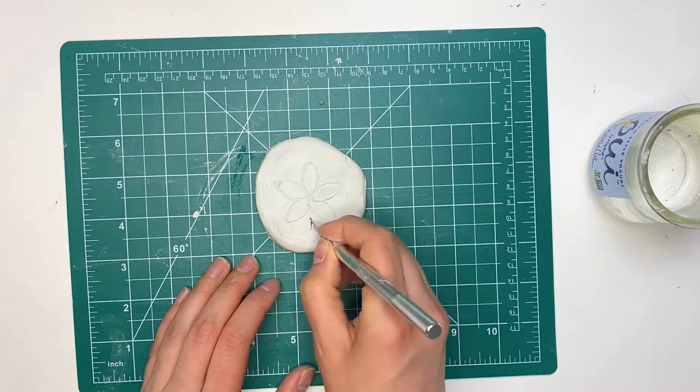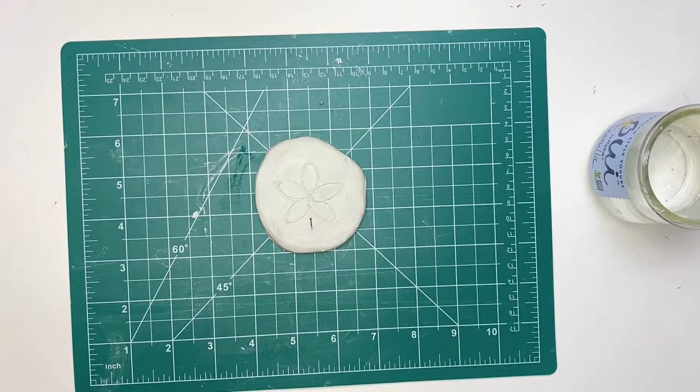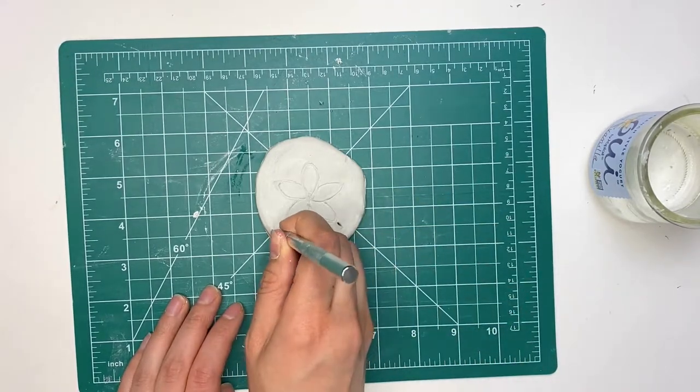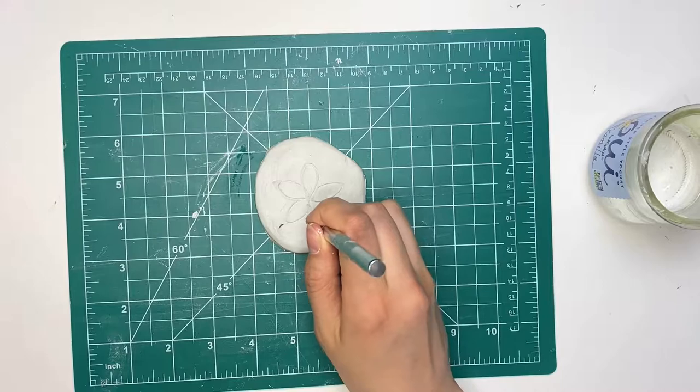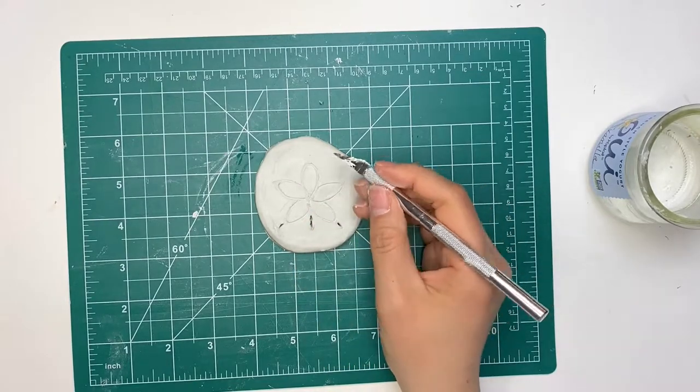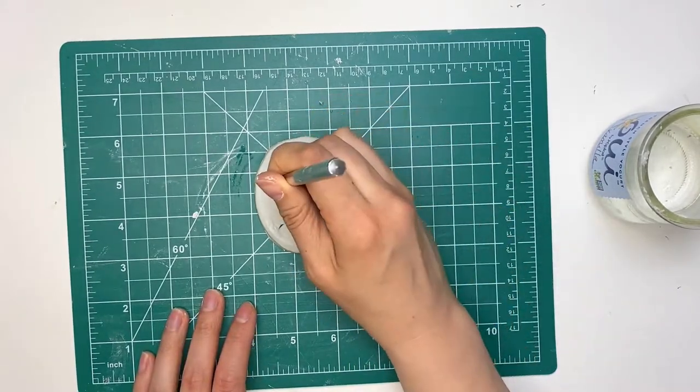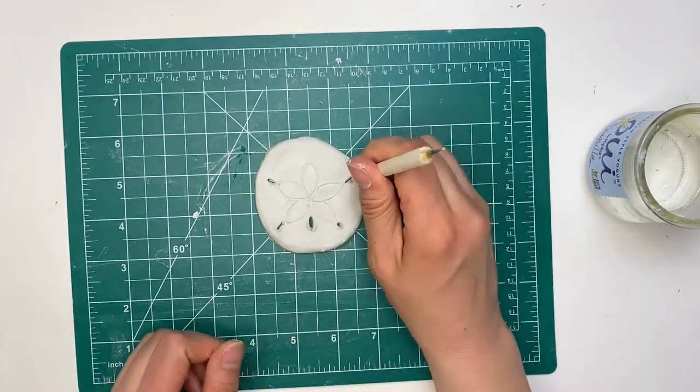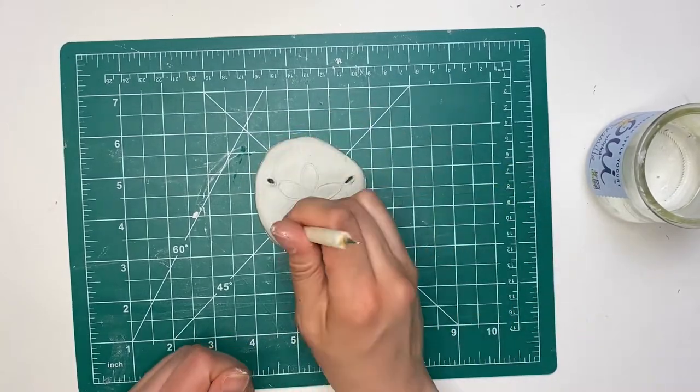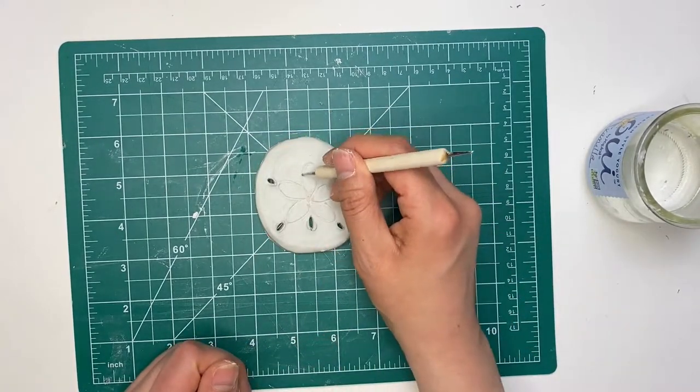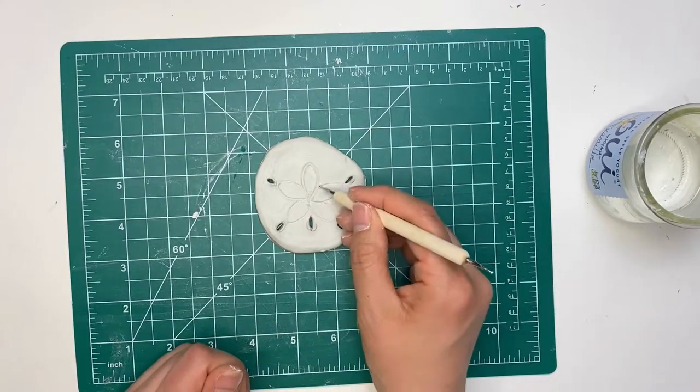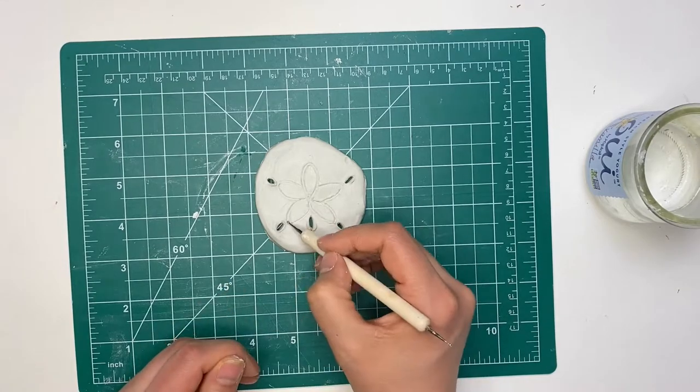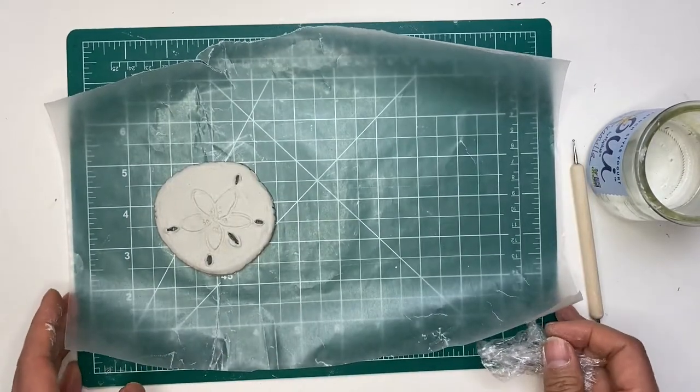And once the little flower was done, I used an exacto knife to cut into the air dry clay to give it those holes that also sand dollars have. I definitely had to look up a picture of a sand dollar to make sure I was getting the holes right, so I do recommend looking up a picture—you can also just follow along with me here. So after the exacto knife, I went in with this dotting tool to make sure that my holes were nice and open. Keep in mind that air dry clay does shrink a little bit when it dries, so just make sure they're nice and open.